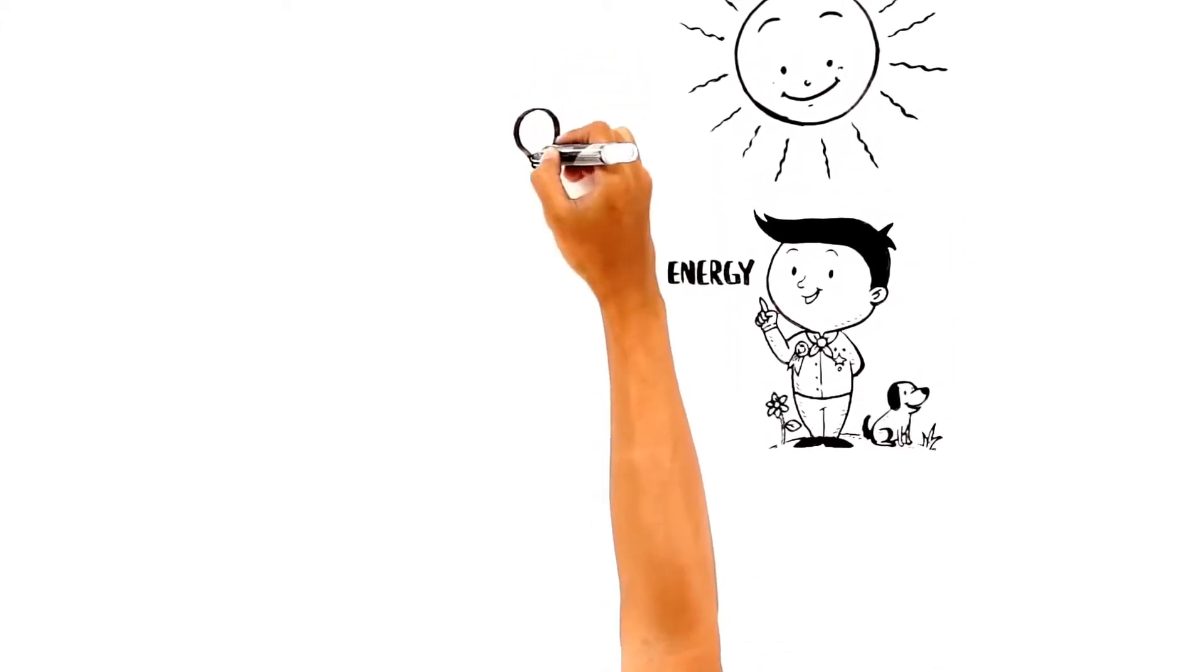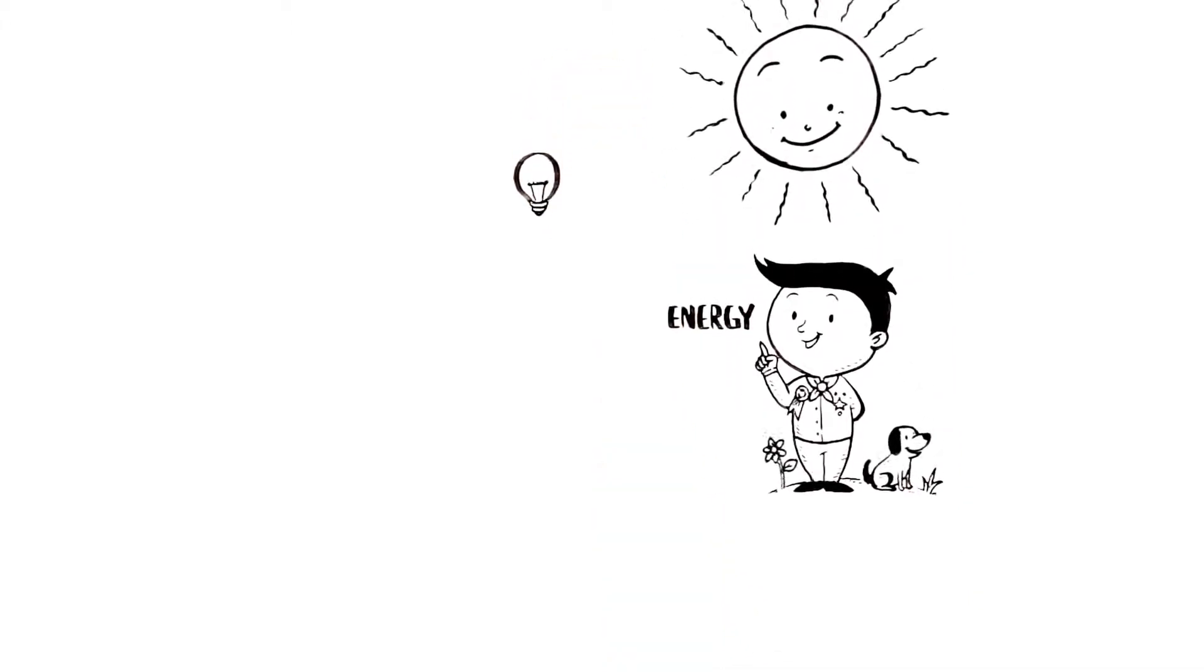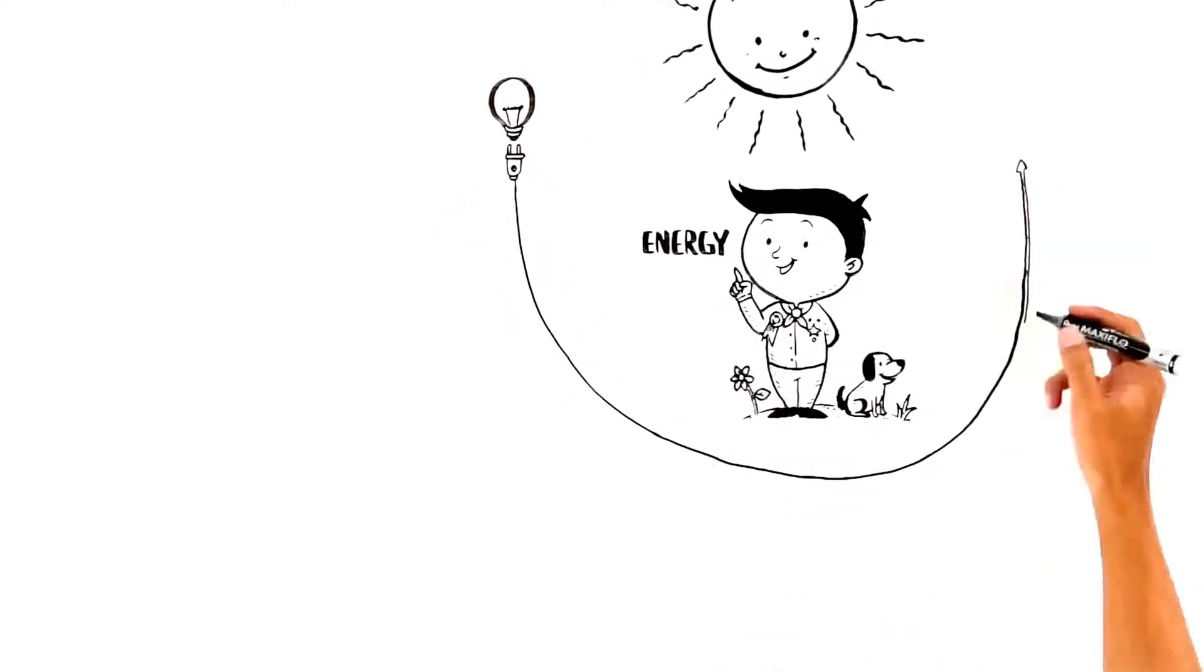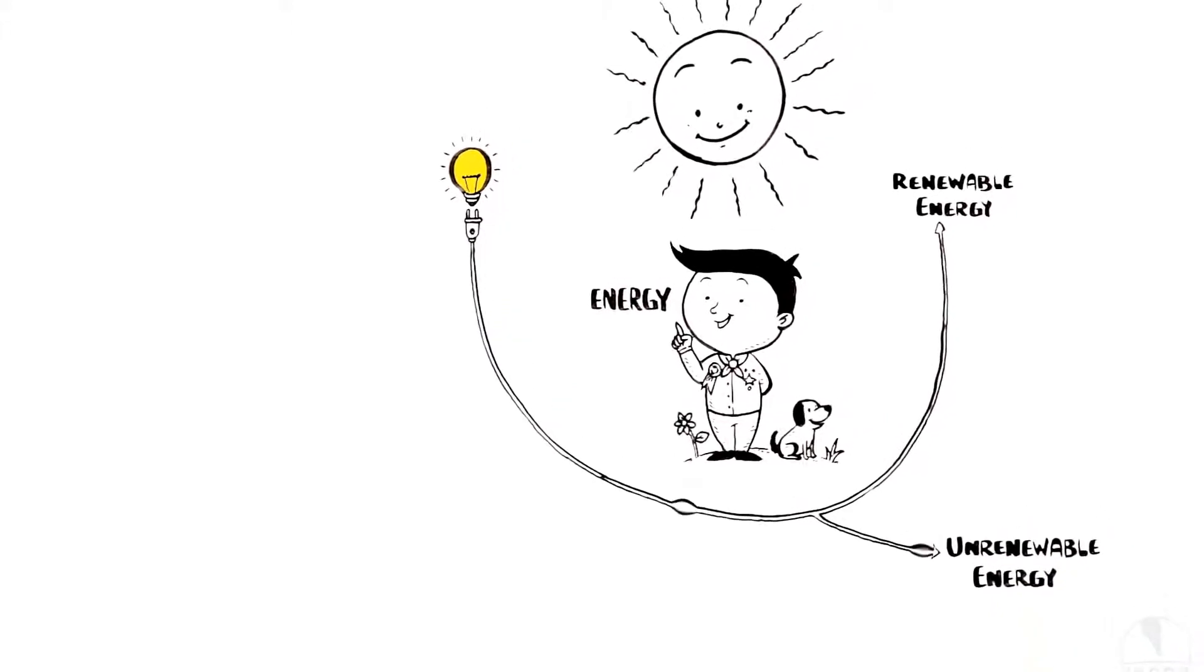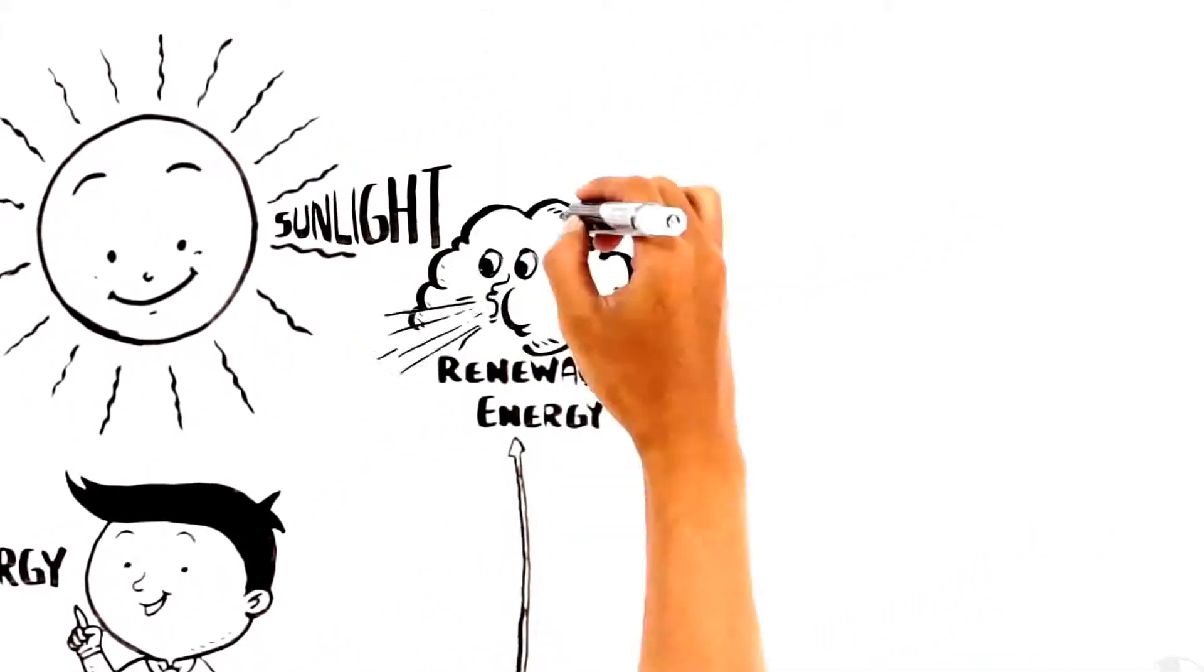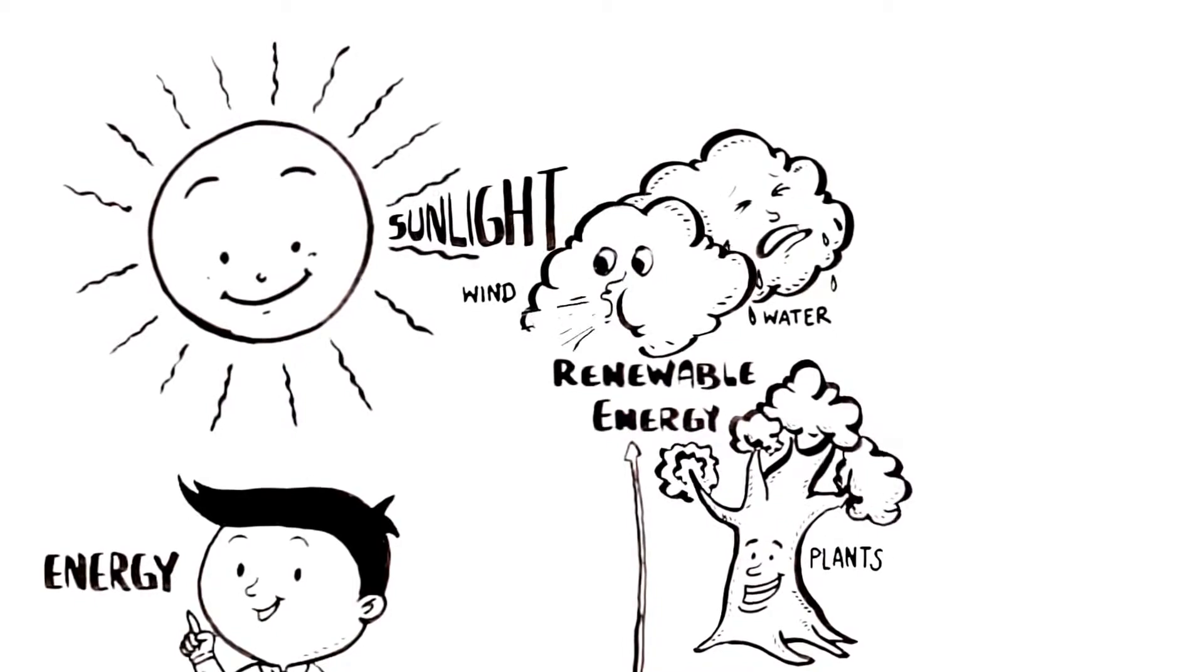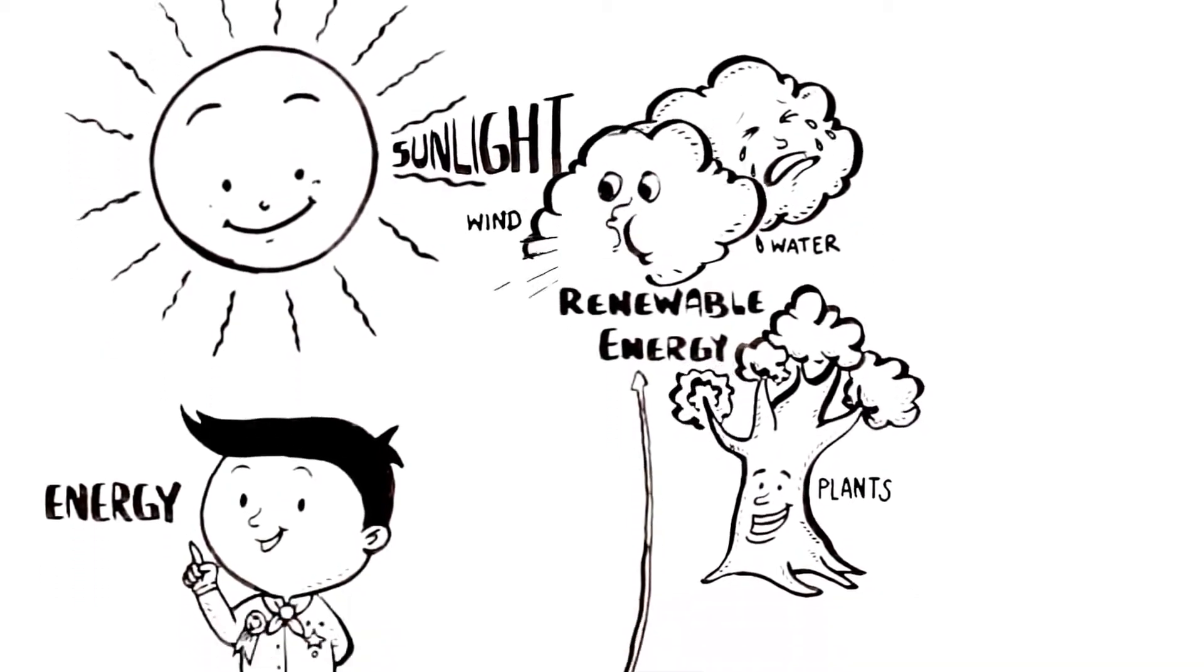At night, electrical energy powers our light bulbs and appliances. There are two kinds of energies: renewable energy and non-renewable energy. Sunshine, wind, water, plants. The flow of energy from these guys never stops.